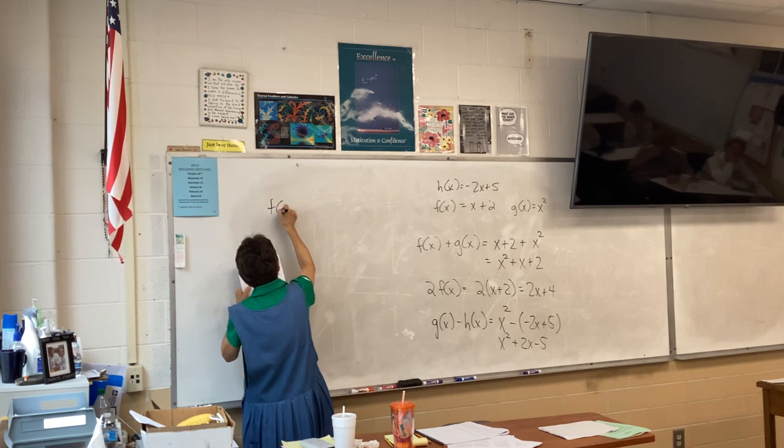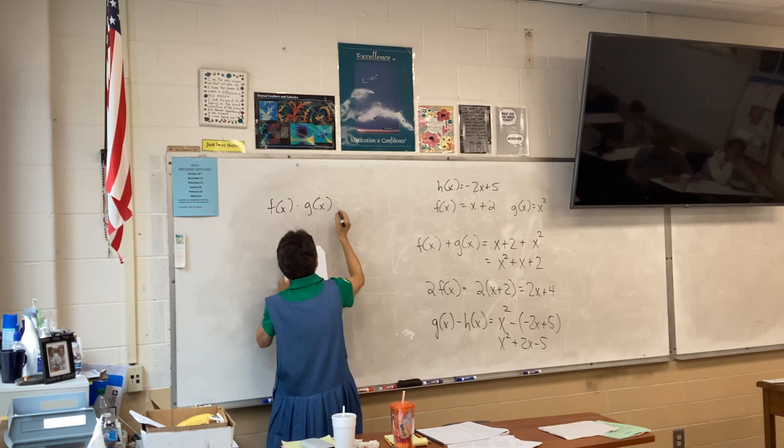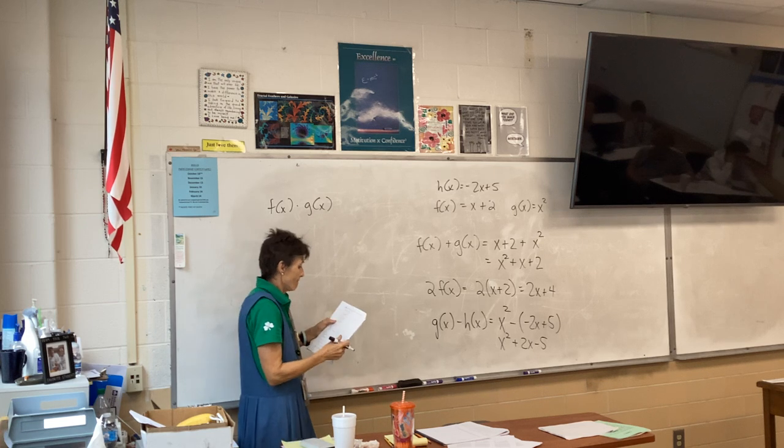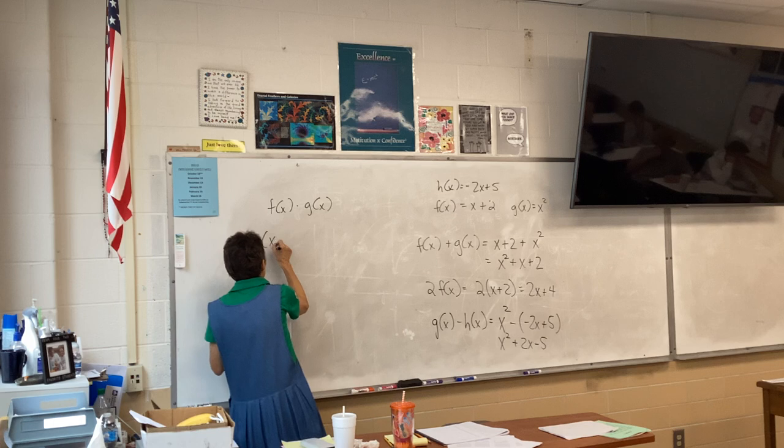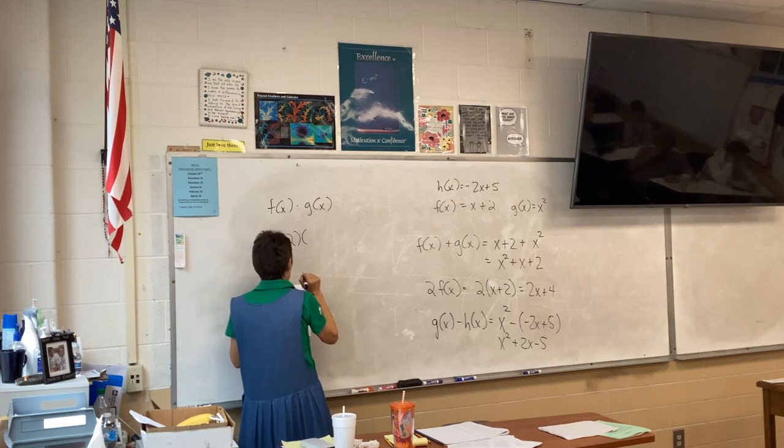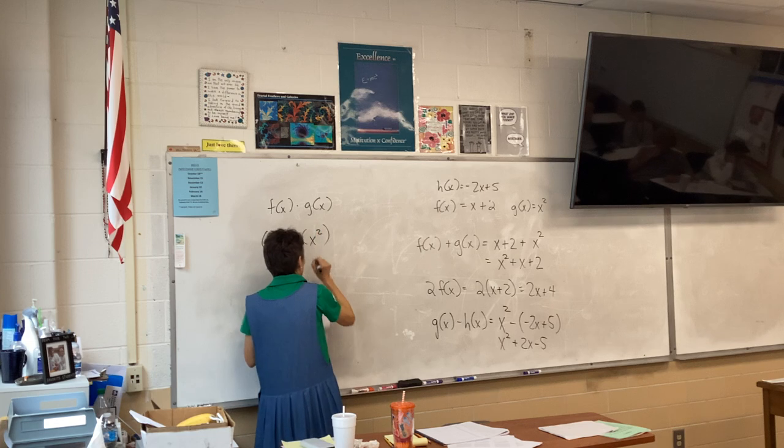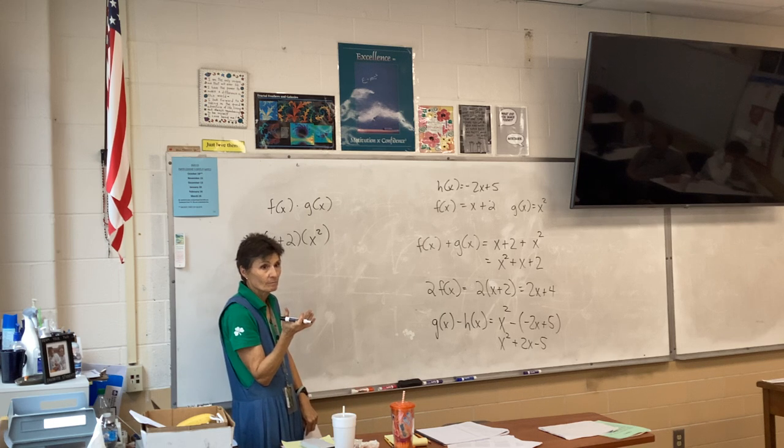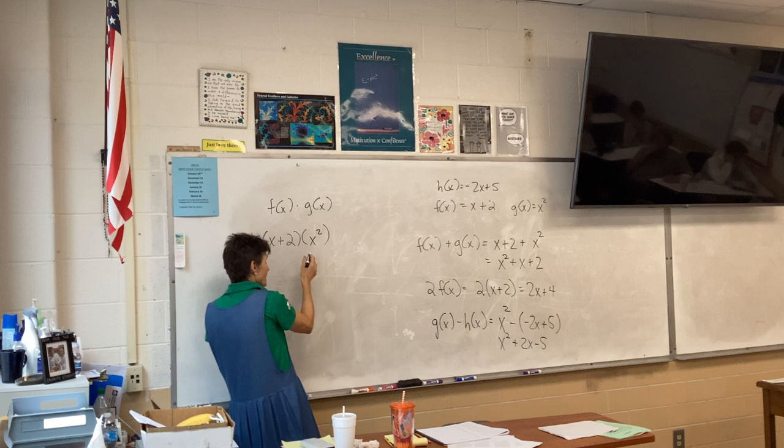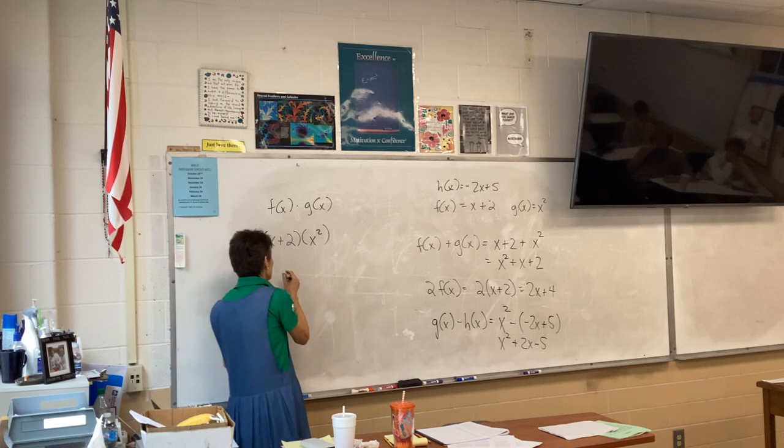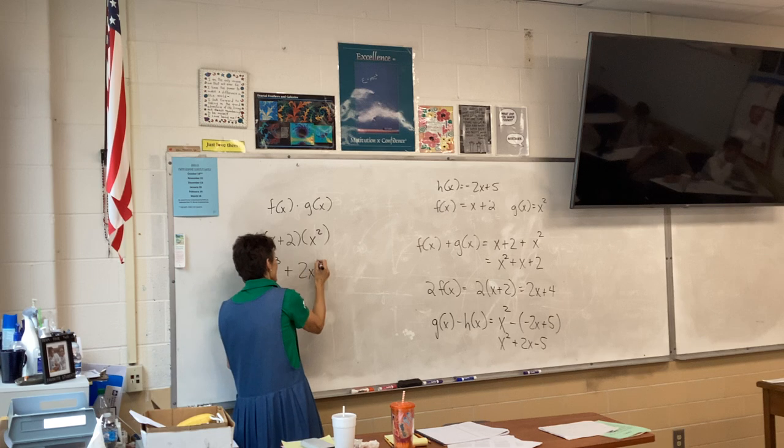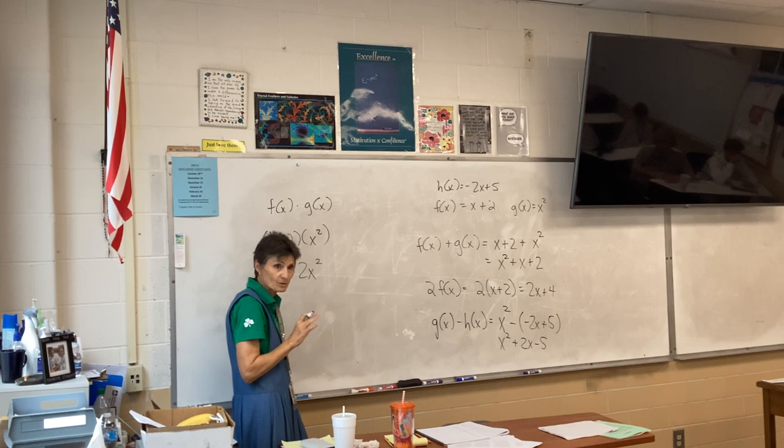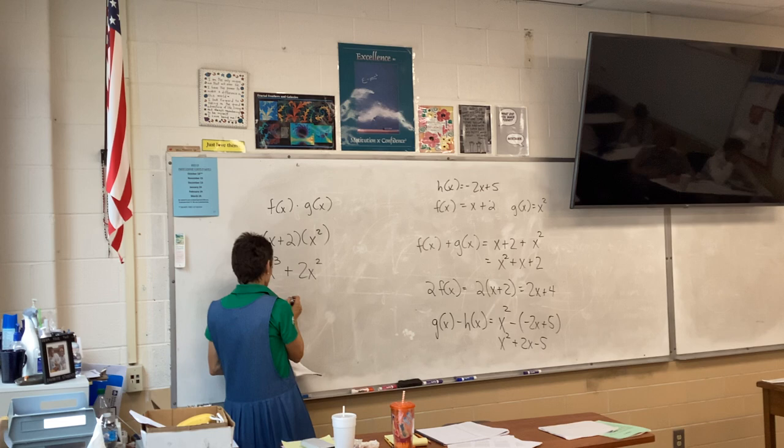What do you think about problem D? It would be parentheses x plus 2, close parentheses, and then parentheses x squared, close parentheses. Perfect. We're going to multiply these together. Which basically is going to be a distribute problem. So x times x squared, what is that? That's x cubed. Very good. X cubed plus 2x squared. This could not be easier. We can do whatever it says.